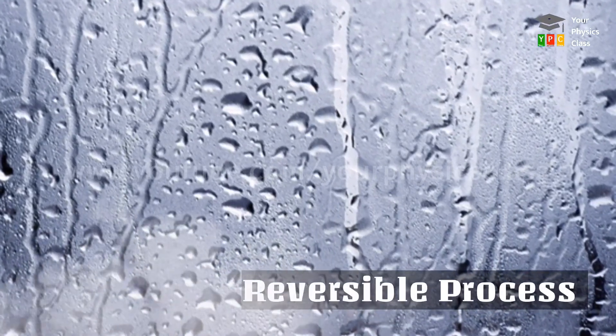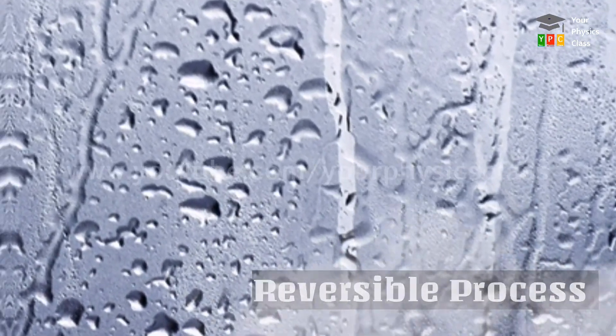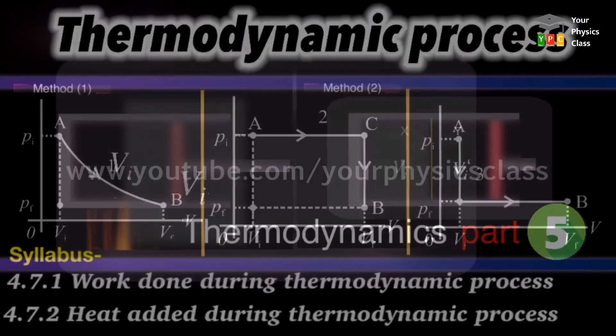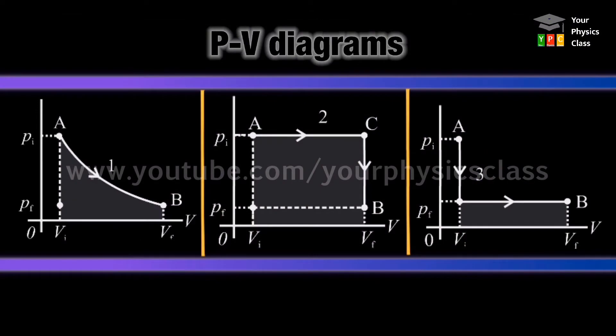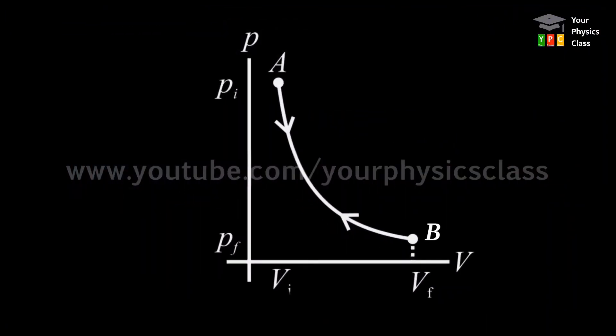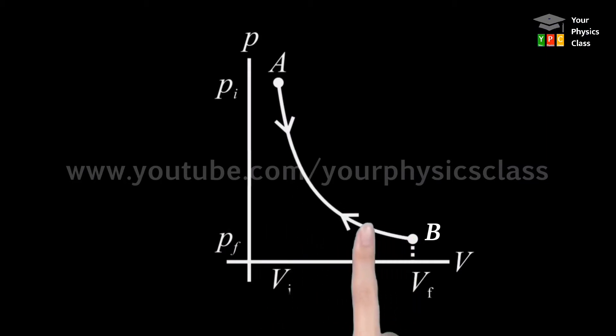That means these can be restored from final state to initial state. We have seen in previous videos that thermodynamic process can be described by PV diagrams. Reversible process is shown on your screen. It shows system changes its initial state A to final state B and vice versa without loss of energy.